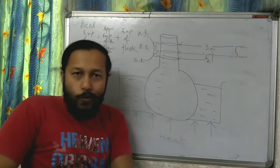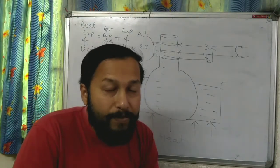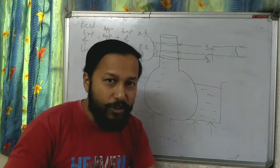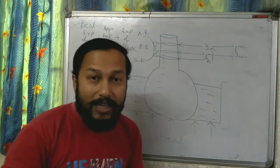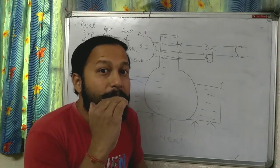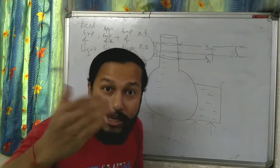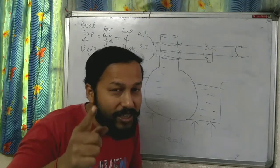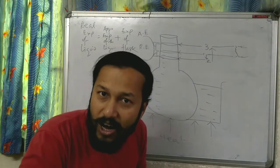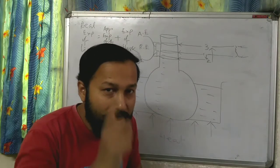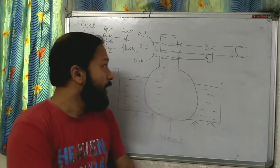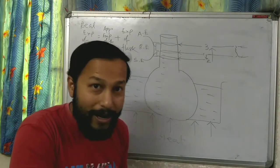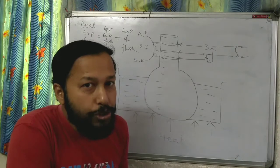From this experiment we can say: real expansion of liquid equals apparent expansion of liquid plus expansion of the flask. Don't forget this formula! Whenever you experiment that liquid also expands on heating, you have to remember this formula.